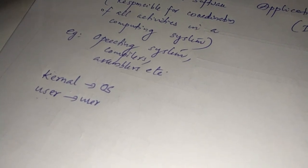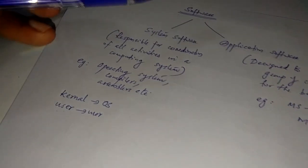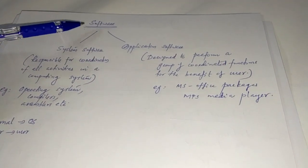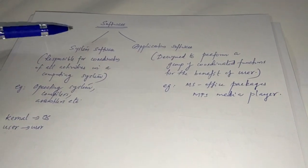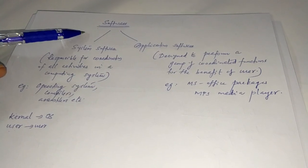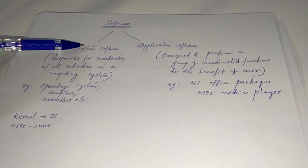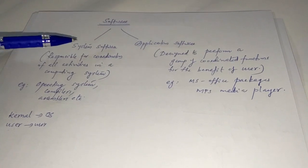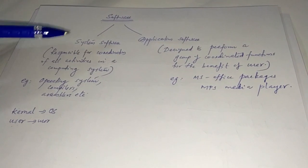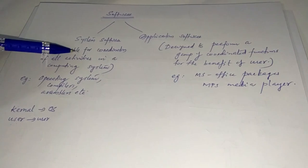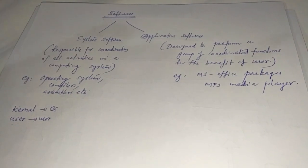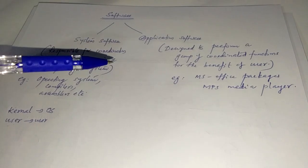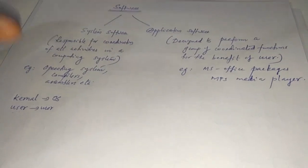These are the things related to software. Software is a stored sequence of programs, divided into system software and application software. System software is responsible for coordination of activities in a computer system, while application software is designed to perform a particular activity for the benefit of the user — that is the difference.